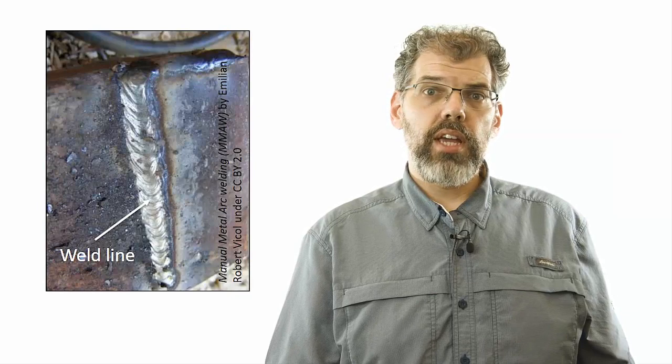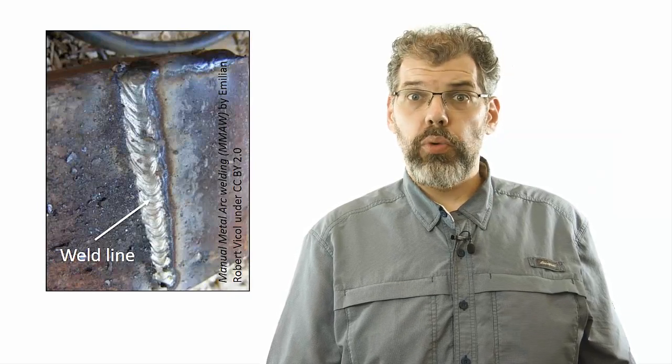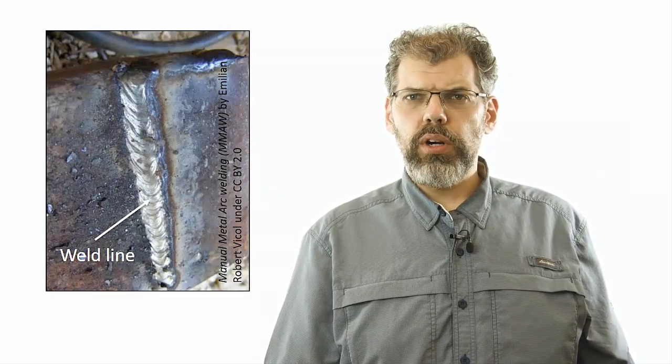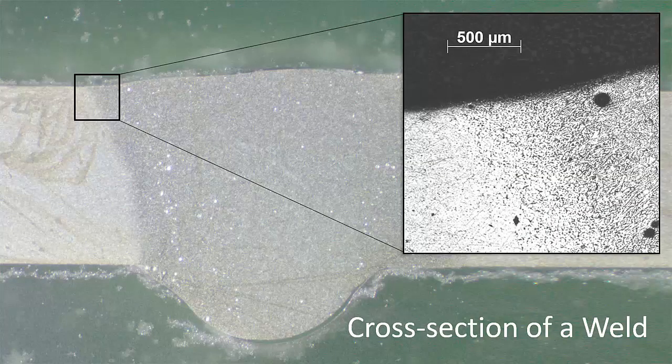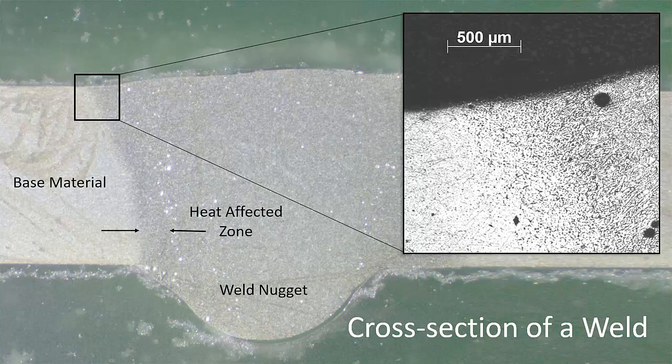Welding processes create visible weld lines where the joining took place. But what are we left with inside these regions? When looking closely at the section of a welded region, different zones in it can be observed: the weld nugget, the heat affected zone, and the base material.